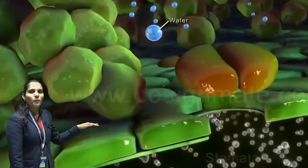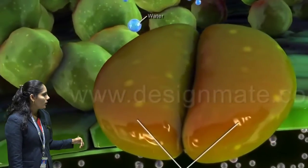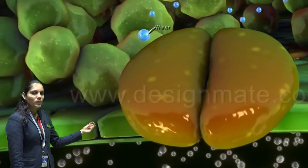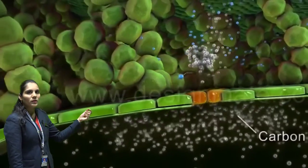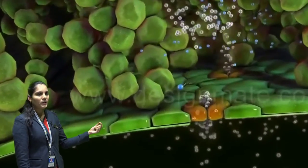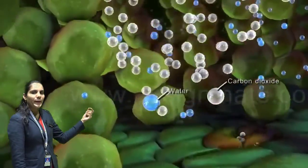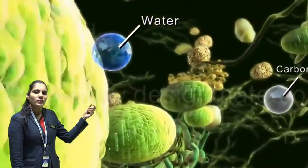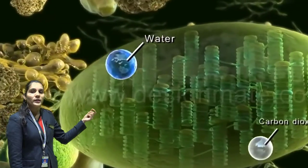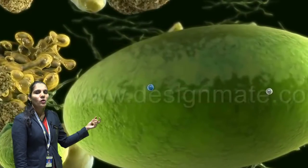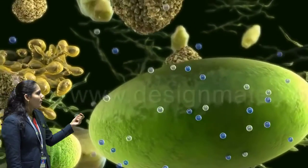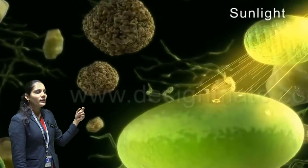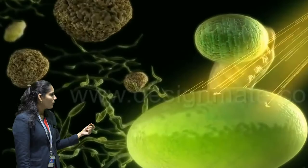During the daytime stomata remain open and during the night time they remain closed. Through the stomata they take carbon dioxide from the air into the cell. After that the water molecules and the carbon dioxide molecules get absorbed — finally absorbed into those specialized cells which have the chloroplast. And inside the chloroplast, with the chlorophyll pigment, they absorb the water molecules and carbon dioxide molecules properly, and the chlorophyll has the ability to trap sunlight from the sun.